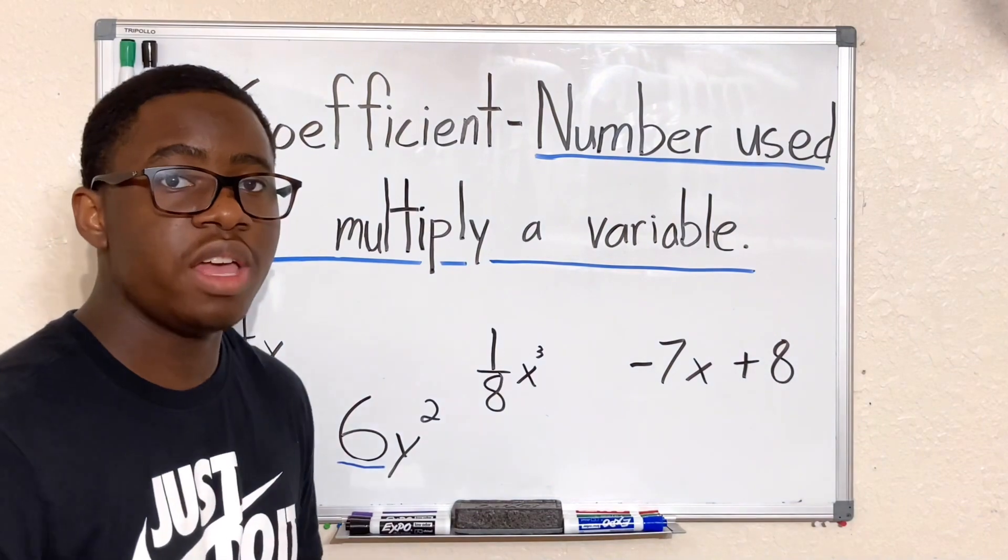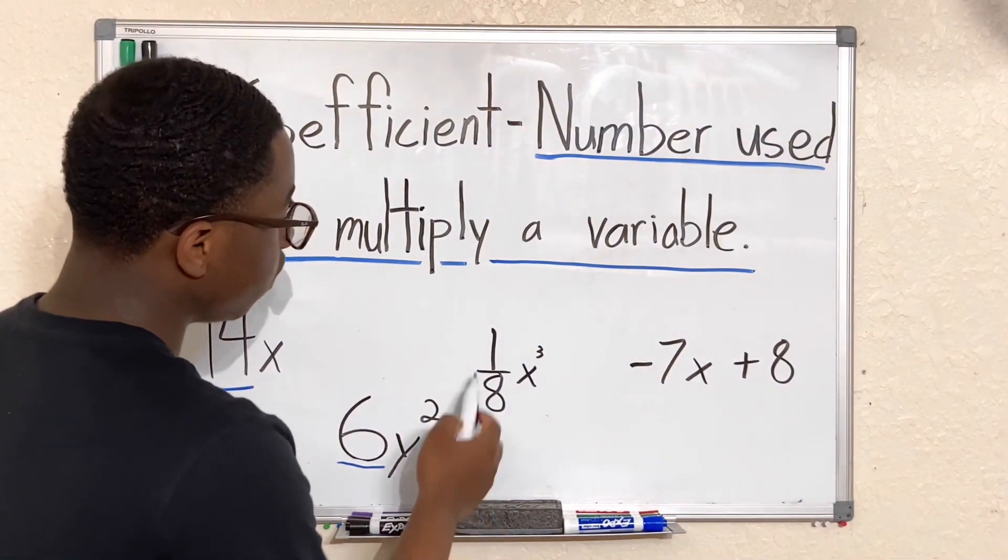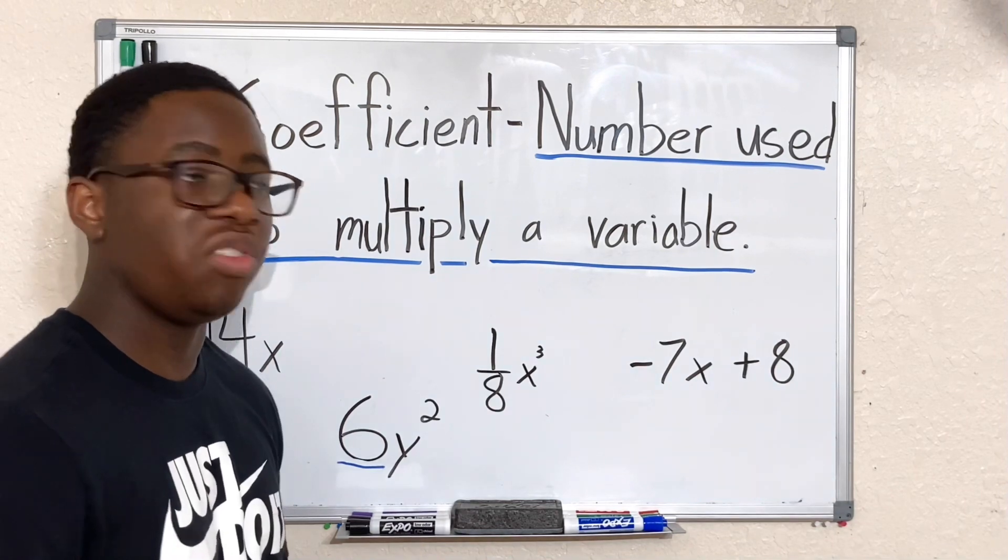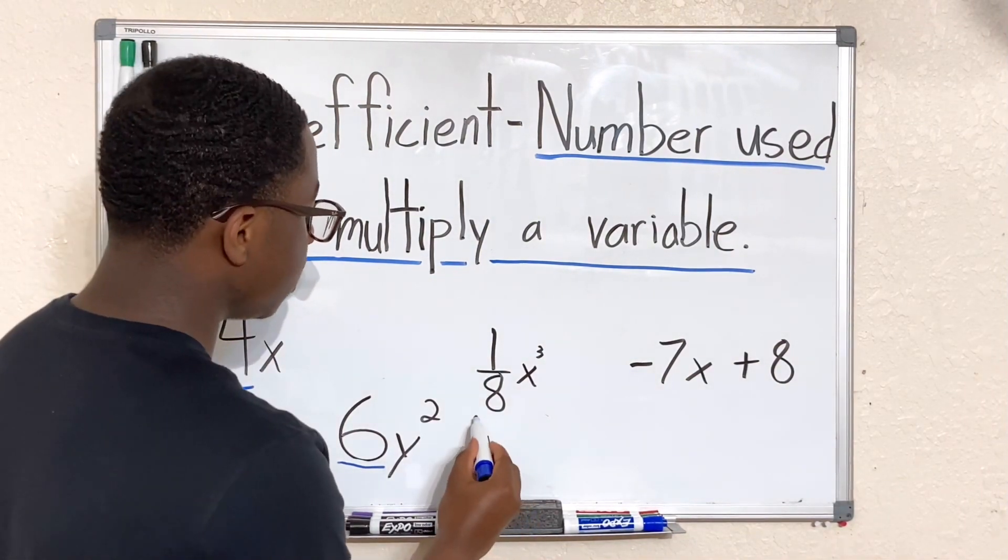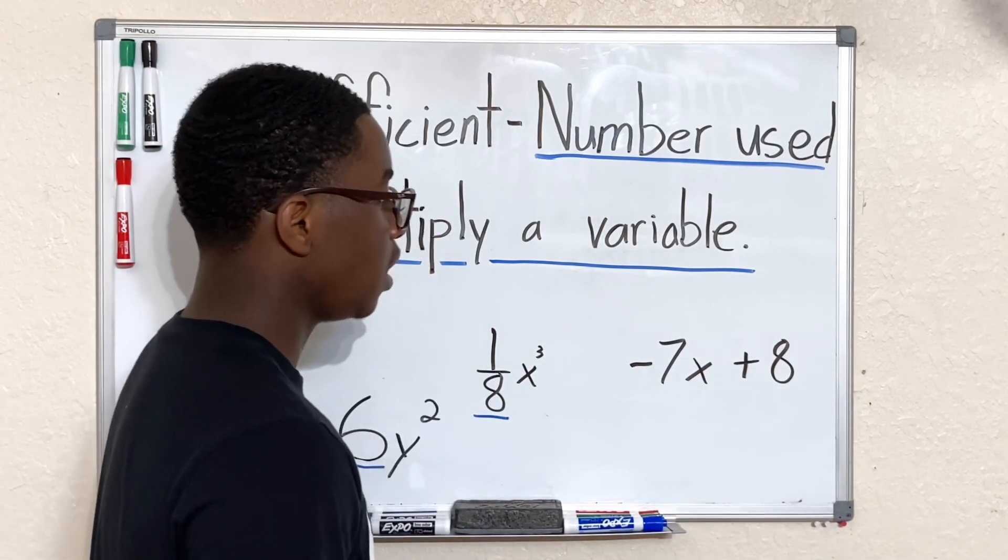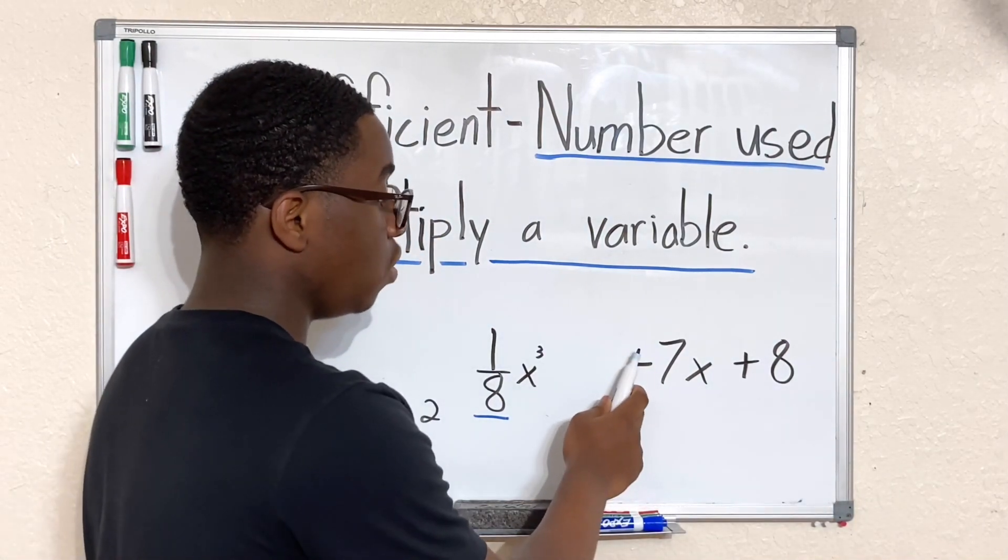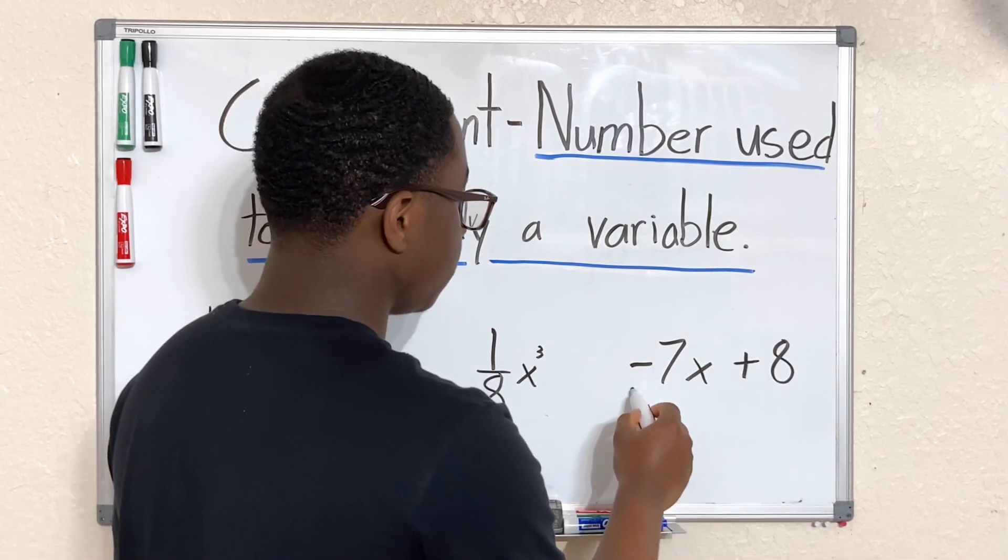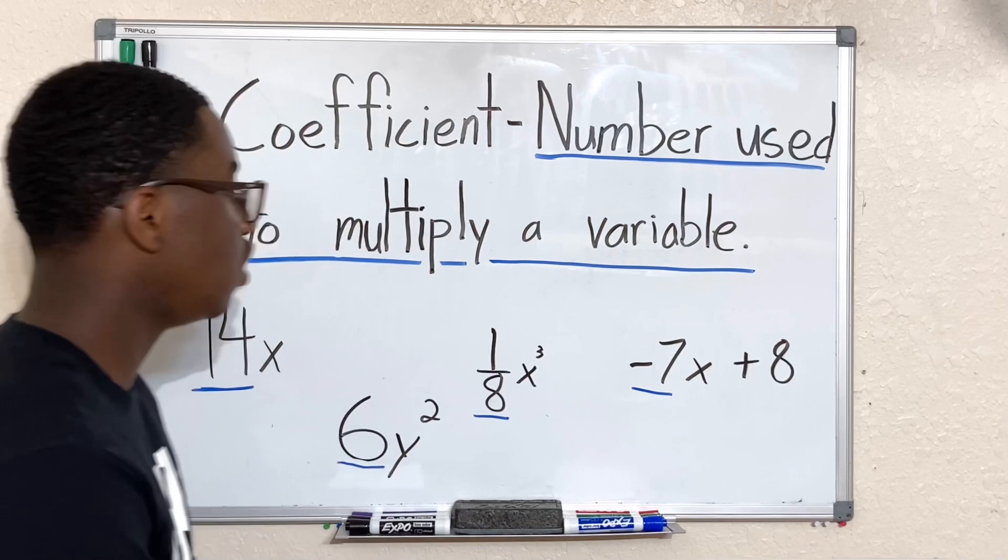However, we do have 1/8. Don't let this fool you—coefficients can also be fractions, so 1/8 is also our coefficient. Finally, here we have -7x + 8. Now don't let the sign fool you. Negative 7 can also be considered a coefficient.